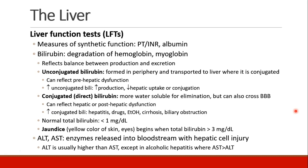When we talk about LFTs, or liver function tests, we're looking at any test that measures synthetic function of the liver. This includes coagulation studies like PT and INR, since those coagulation factors are made in the liver, or an albumin level, since those proteins are made in the liver. Bilirubin tests also reflect liver function. Bilirubin comes from degradation of hemoglobin and myoglobin. Unconjugated bilirubin is formed in the periphery and then transported to the liver where it is conjugated.